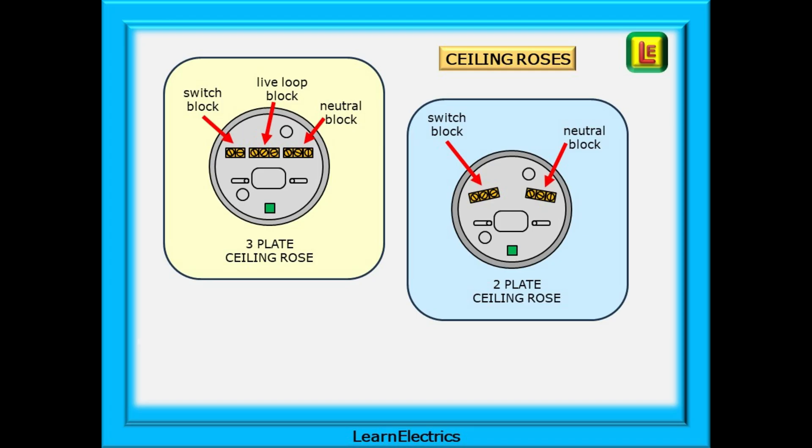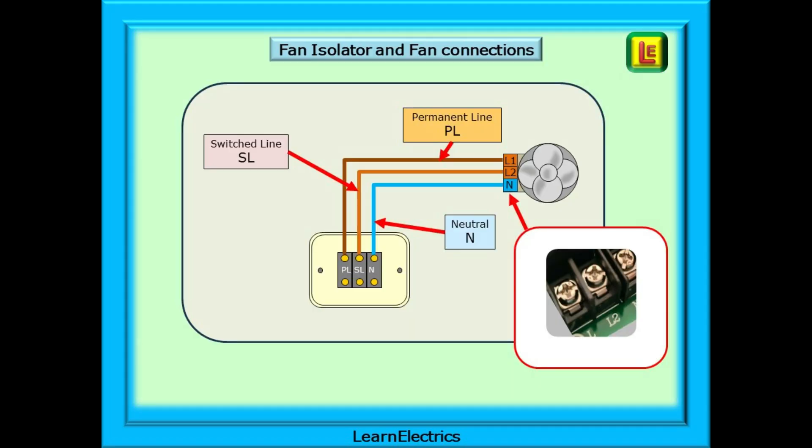We'll be using three pole fan isolators with connections for a permanent line, a switch line and a neutral conductor. This is to enable the fan to be completely isolated electrically when carrying out cleaning or mechanical maintenance.